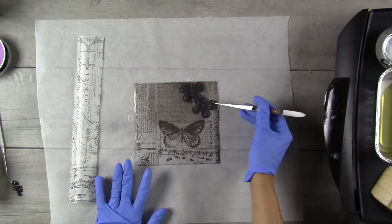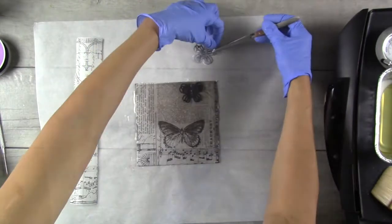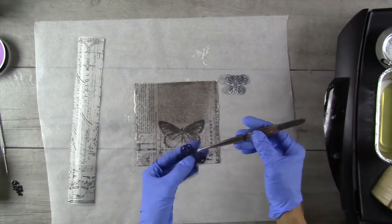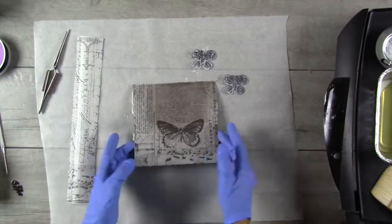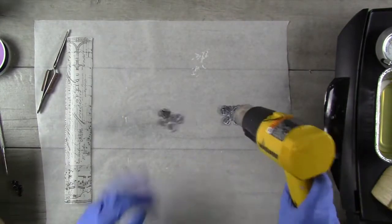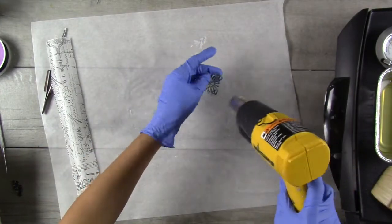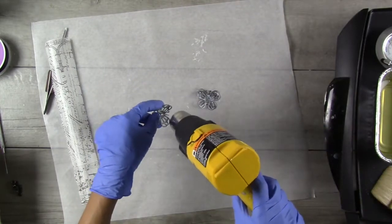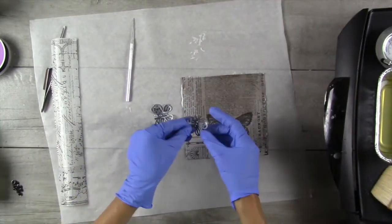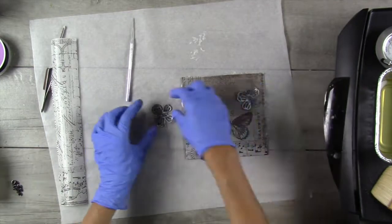To give the piece even more depth and texture and interest I decided to add these little butterfly cutouts. I cut them out of black paper with a paper punch that I had and then I dipped each one of them into white encaustic paint to soften the look of them and to incorporate them into the piece a little bit better.